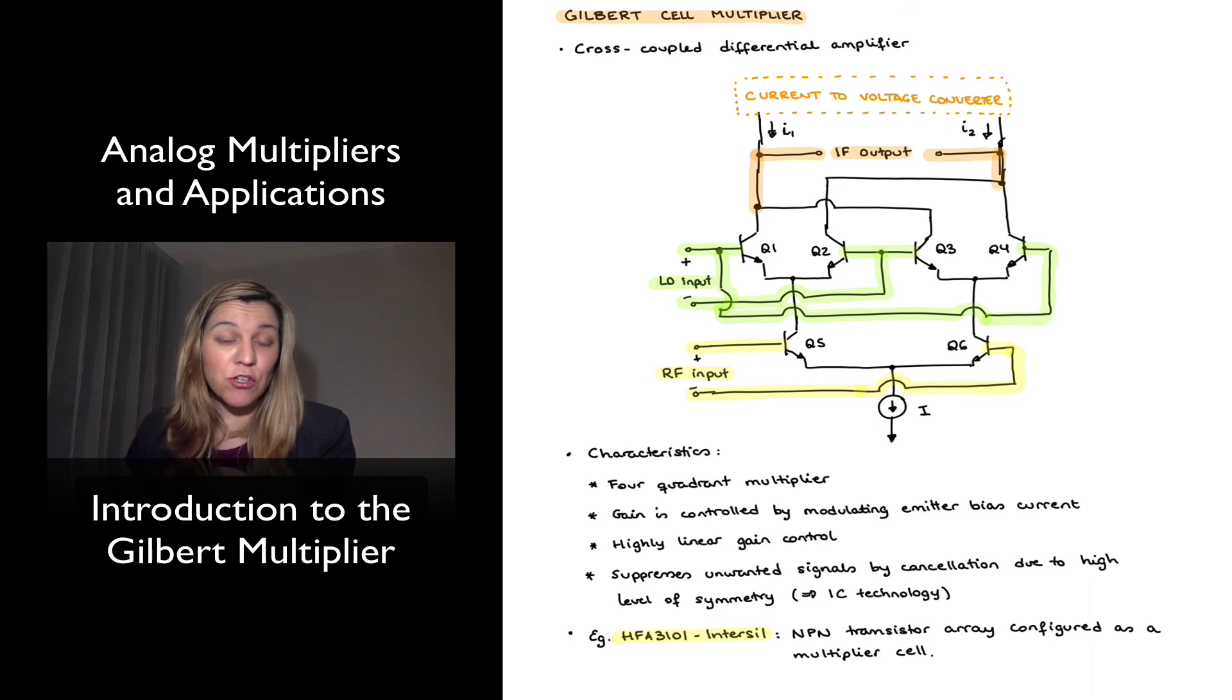And then finally, the applications for the Gilbert multiplier are just the same applications as for any multiplier, so they're used as RF mixers, they're used as modulators, demodulators, automatic gain control circuits, frequency doublers, frequency shifters, multiplication divisions, square root operations, all of those.